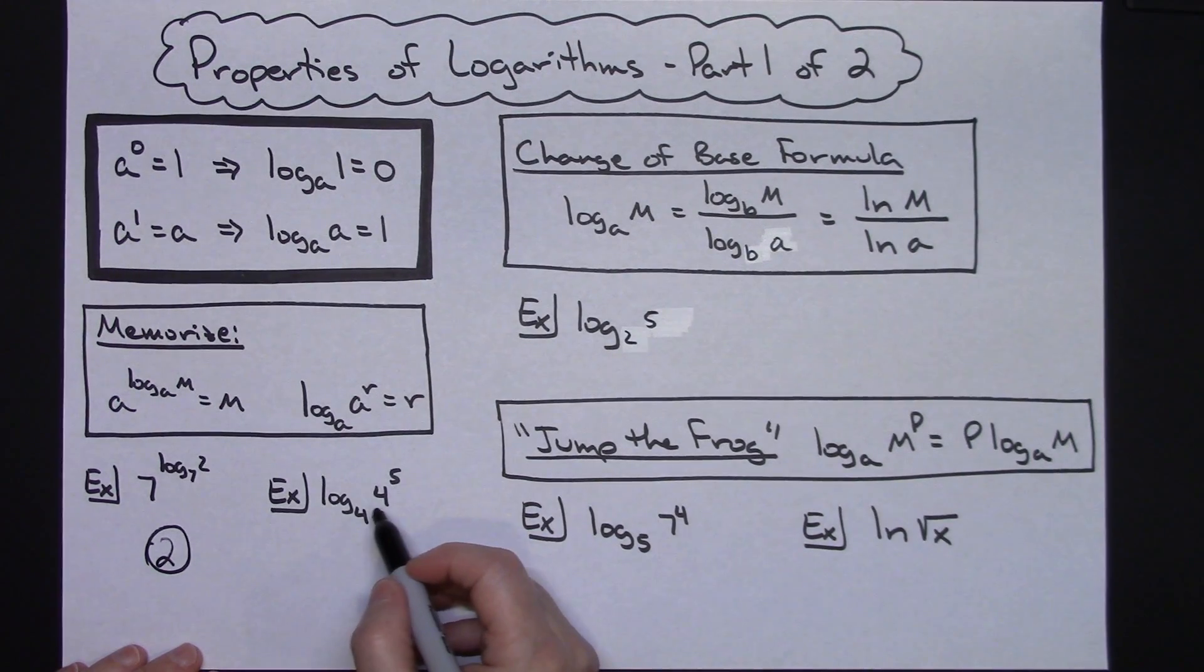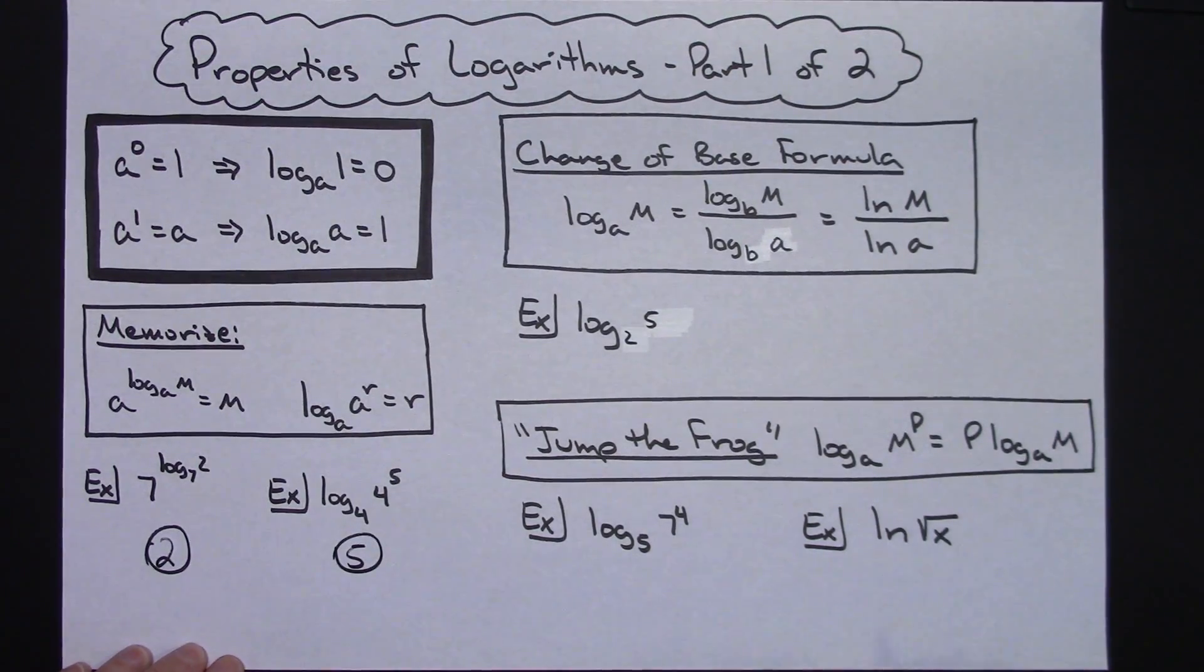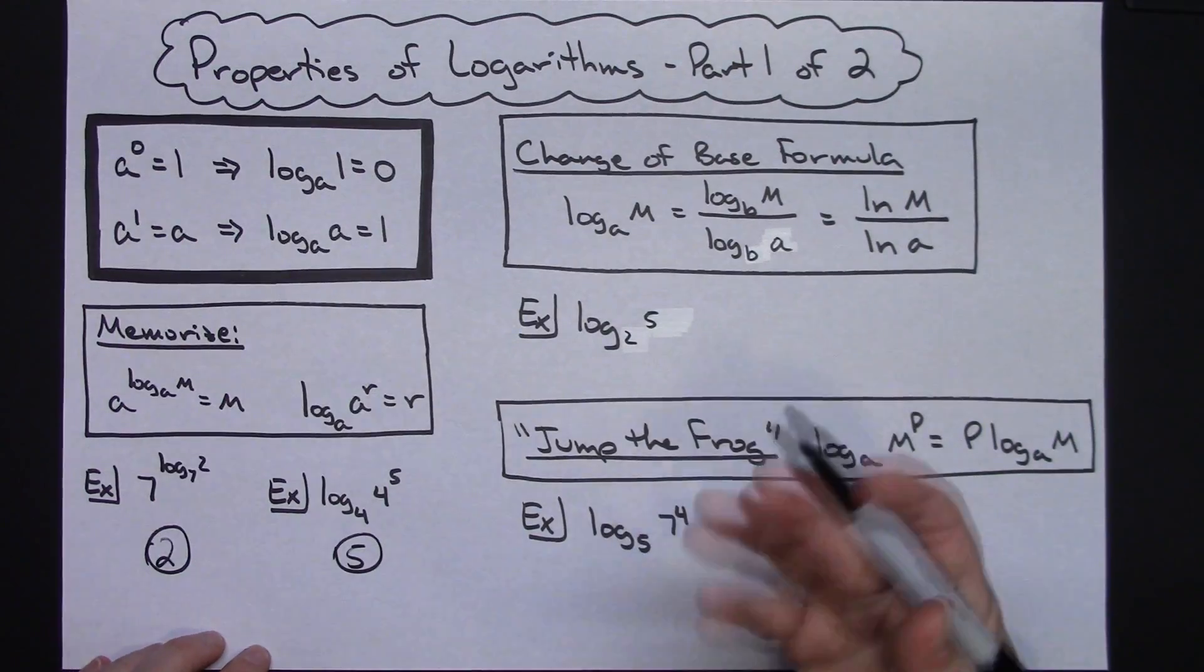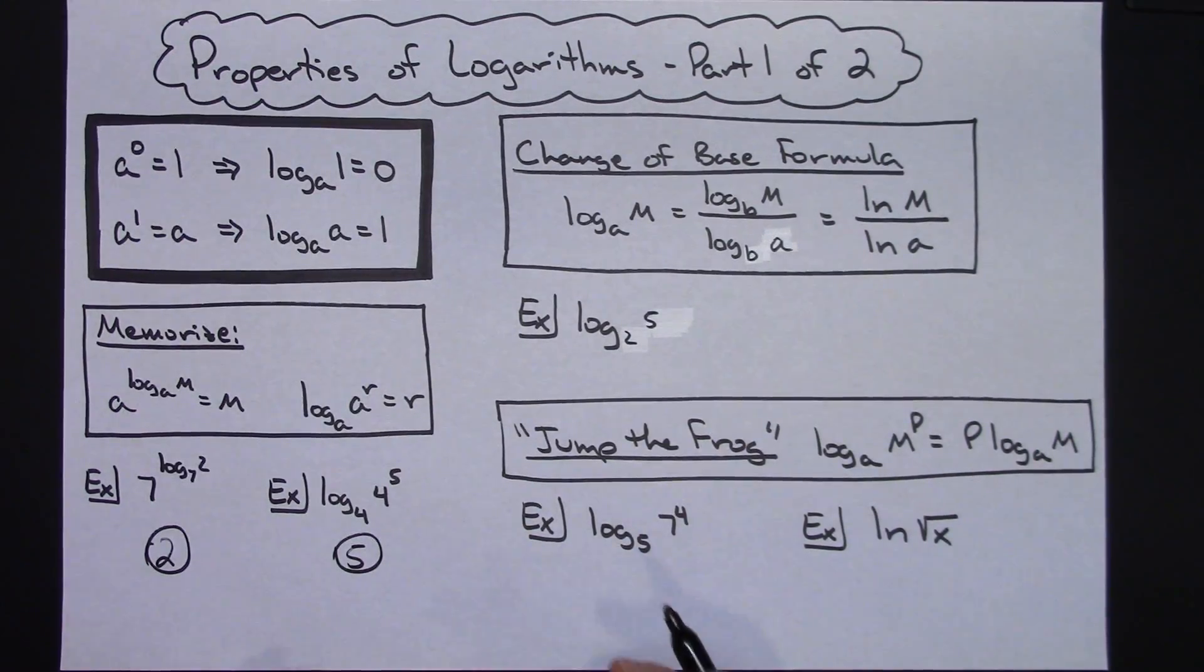Then looking at this example, I've got the log of four to the fifth with a base of four there. So the base on the log is four. The base on this exponent is also four. So I can look at that real quickly and I can evaluate that as being five. So just handy little things so that you can quickly evaluate some of your logs.